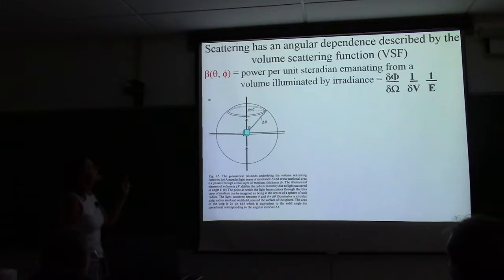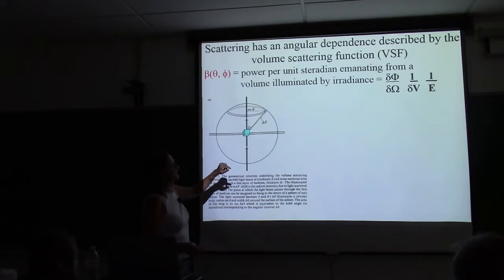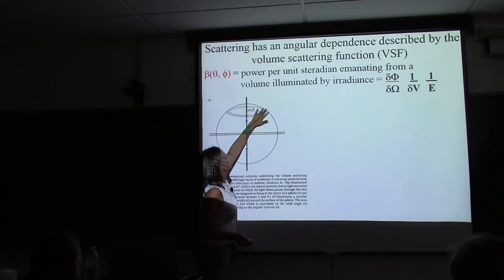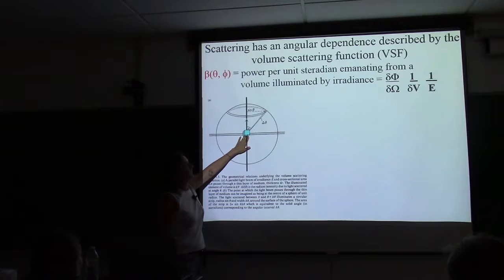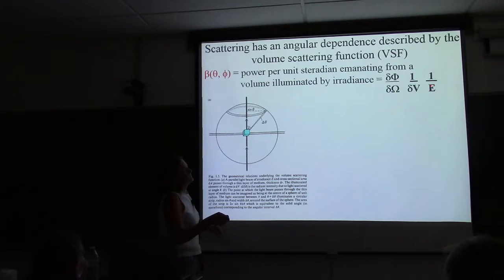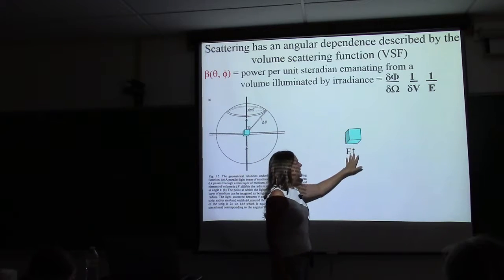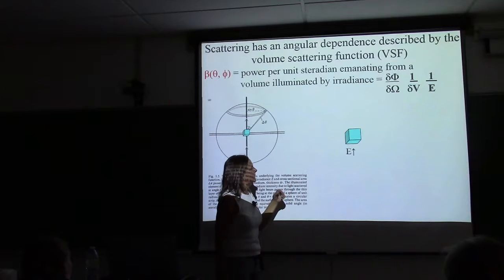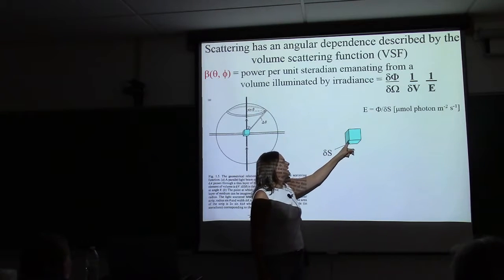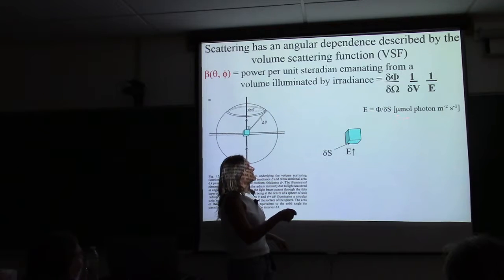The volume scattering function is designated beta as a function of the scattering angle and the azimuth angle. It's the power per unit steradian per solid angle coming from a volume of water illuminated by irradiance — the fractional power per solid angle per volume due to incident irradiance. If we take that volume as a cube, the irradiance is incident on that surface area, so you have moles of photons per meter squared per second. That cube has some height, so the volume is the fractional area times the fractional height.